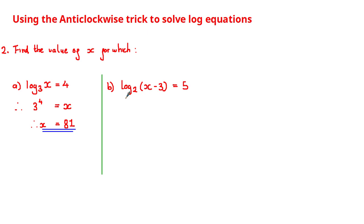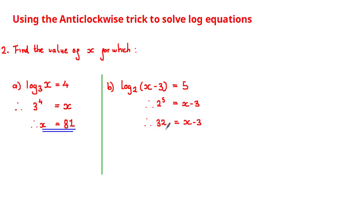To solve this equation log base 2 of (x minus 3) is equal to 5, we can again use the anti-clockwise trick where the base is 2. Therefore this is equivalent to 2 to the power of 5 is equal to x minus 3. Note that it doesn't matter what the expression inside the log is — the relationship between the log equation and the power equation will still be exactly the same. Now 2 to the power of 5 is equal to 32, therefore 32 is equal to x minus 3, and adding 3 to both sides gives x is equal to 35.